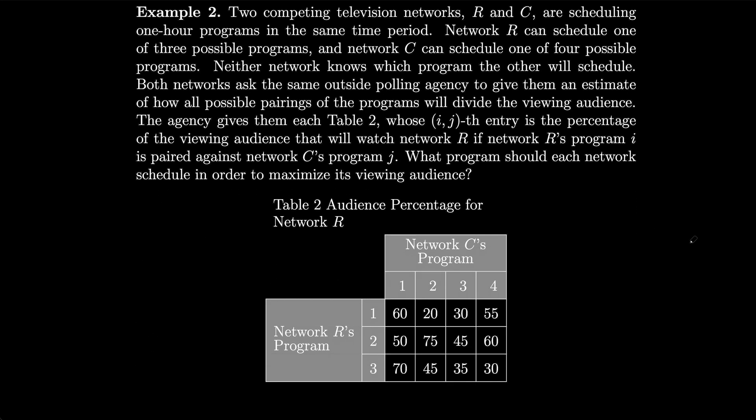As an example, let's say there are two competing television networks, R and C, scheduling one-hour programs in the same time period. Network R can schedule one of three possible programs and network C can schedule one of four possible programs, and neither network knows what the other will schedule. Both networks ask the same outside polling agency to estimate how all possible pairings of programs will divide the viewing audience. Notice they gave us an audience percentage table, but we don't have a payoff matrix, so we need to generate one.